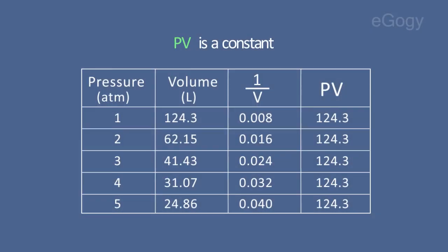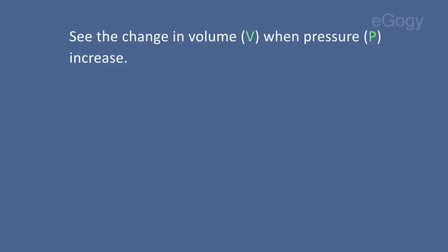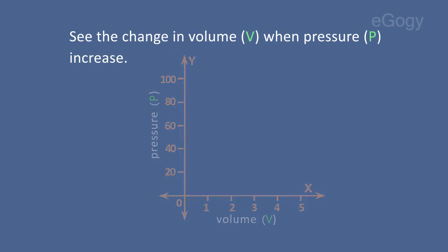From the table below, we can understand that PV is a constant. See the change in volume when pressure increases.